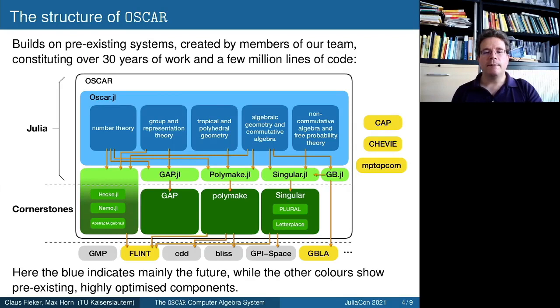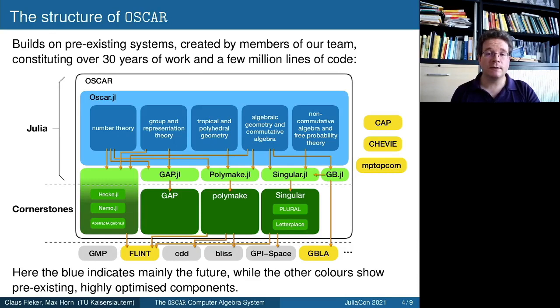Above it in darker green are the four cornerstone systems. In number theory there is Hecke and Nemo — these are Julia packages — and also AbstractAlgebra, which is more general than number theory. There's the GAP computer algebra system dealing with group and representation theory. Polymake is a computer algebra system specialized on tropical and polyhedral geometry. And there's Singular, which is about algebraic geometry, commutative and non-commutative algebra, and related things.